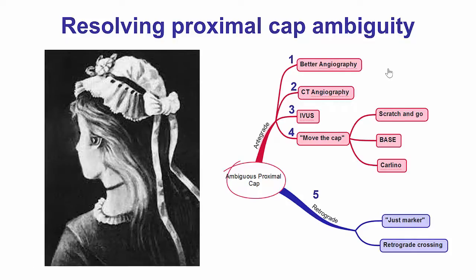In summary, this is a case in which the retrograde approach was used to resolve proximal cap ambiguity. In this particular case, we actually had both proximal and mid ambiguity. We tried antegrade but were unable to make the connection; however, retrograde was successful in leading to successful crossing. Another important component of this case is using a guide catheter extension — a guideliner — when there is retrograde into the LAD or circumflex, which is a safety measure to prevent any potential injury to the left main by retrograde wiring attempts.